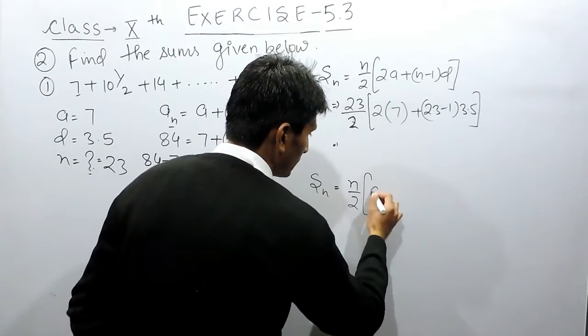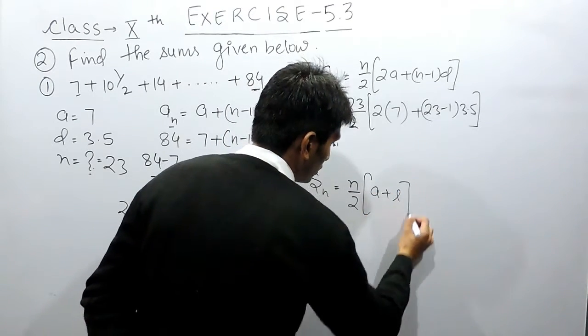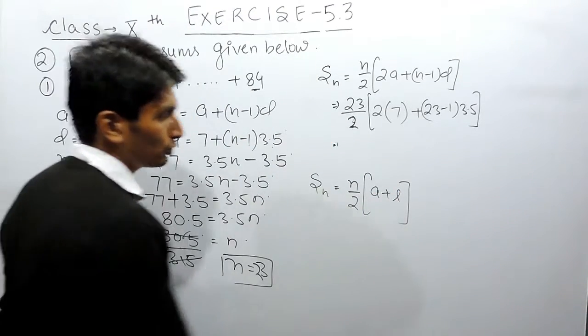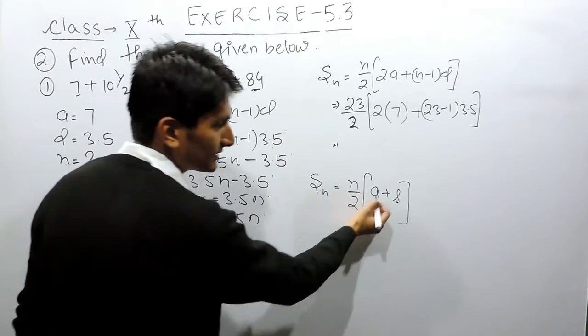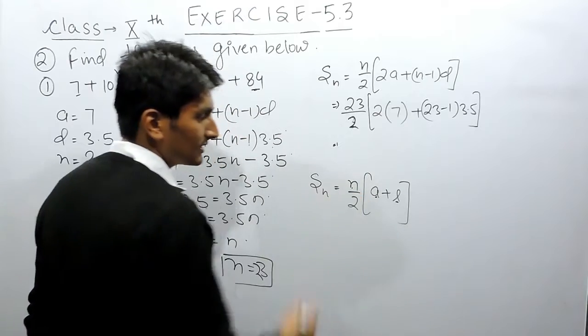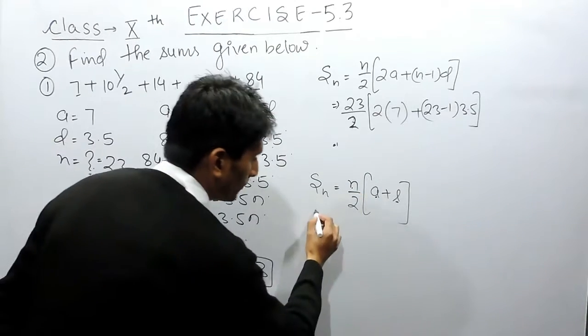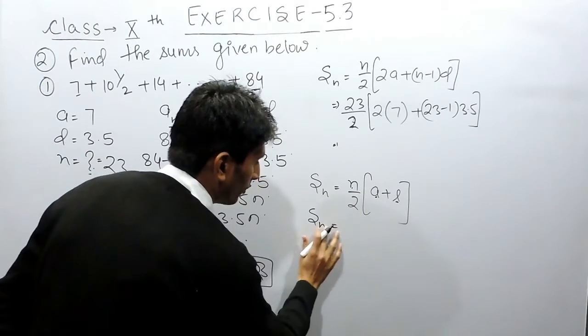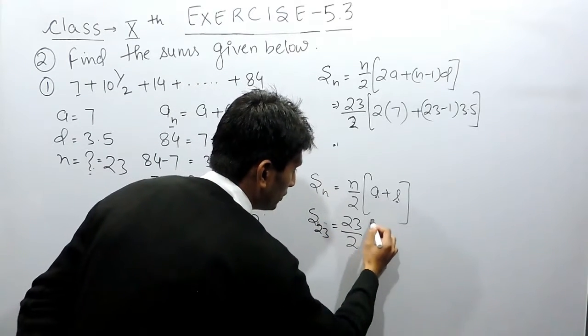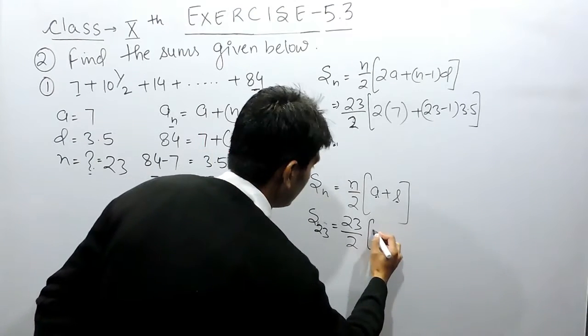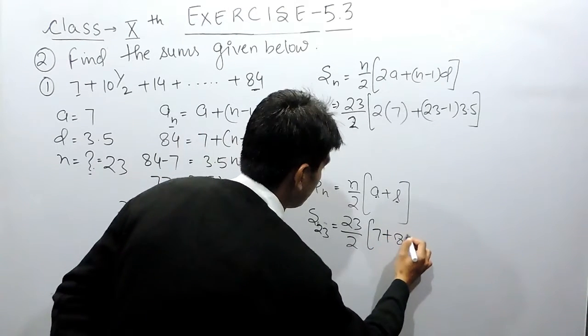If you want to find the sum, you can use this formula also, where this is the last term and this is the first term, and this is the number of terms. So to find the sum of 23 terms, this will be 23 upon 2, the first term is 7, and the last term is 84.